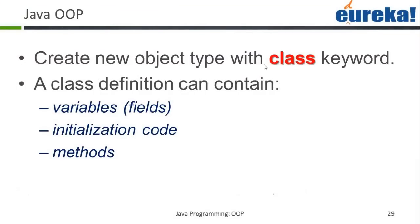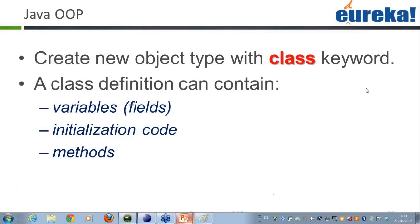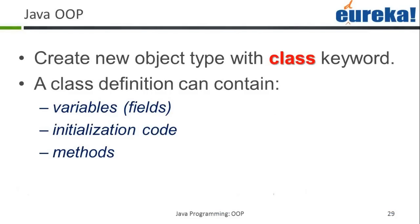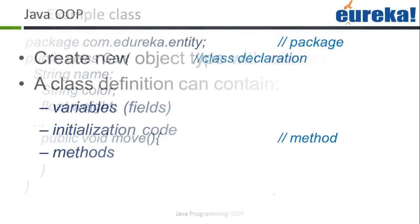So let's also talk about the classes concept here in Java. We can create a new object type with the class keyword. A class definition can contain the variable, the initialization code, and the methods, which is very much like a C and C++ programming construct that you people can think about.